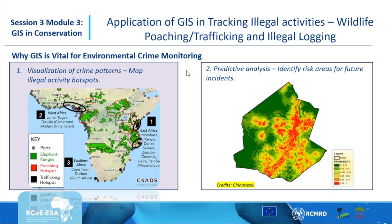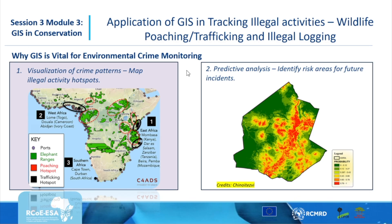In this map we have overlaid the elephant ranges, the ports where elephant products are exported to the outer world, and the trafficking hotspots. Based on this you can understand where the elephants are being killed and what the exit points are through which elephant products are leaving the African continent.